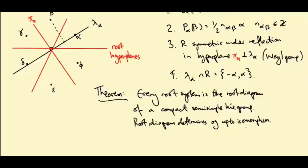For example, SU2 and SO3 we've seen have isomorphic Lie algebras, but they're not isomorphic as groups. So they'll have the same root diagram.